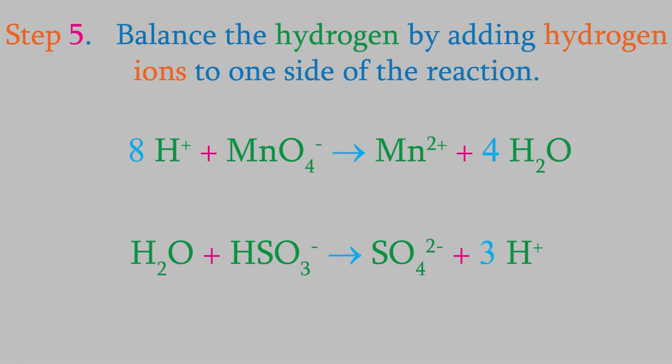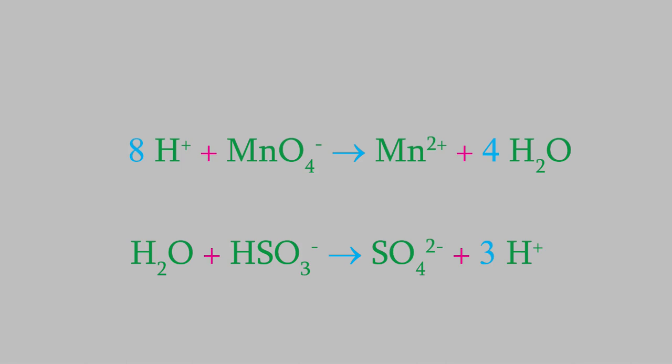We've now balanced all the atoms, and in a precipitation or acid-base reaction, that's all we'd have to do. But in redox reactions, we have one more thing to worry about. We've been adding hydrogen ions to our reactions, but since those ions have a charge, that means we've been changing the charge on each side of the reaction. That means we've created some impossible reactions. For example, let's add up the charges on each side of the reduction reaction — there are eight H+ ions and one permanganate ion, for a total charge of plus seven on the left side. On the right side, there's a manganese plus two ion and four neutral water molecules, for a total charge of plus two. So our reaction went from having a charge of plus seven to plus two, but that's impossible — you cannot create or destroy charges during a reaction.